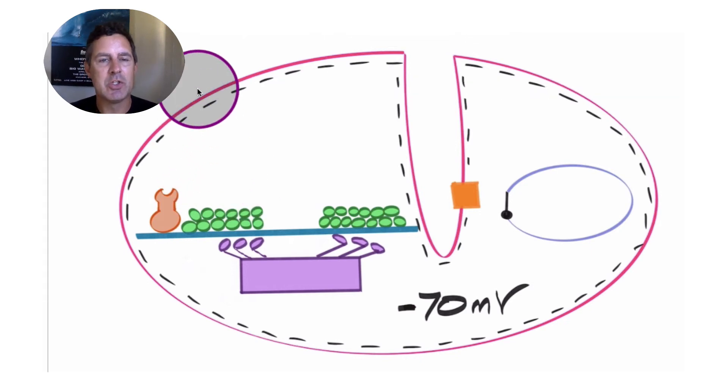There's a voltage or difference in charge between the inside and outside of the cell. And let's just say that's negative 70 millivolts. That's no different than other excitable cells like neurons. Keep in mind, neurons and muscle fibers are both excitable cells that are able to undergo depolarization events.